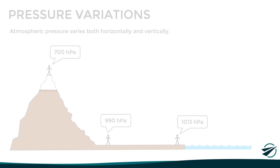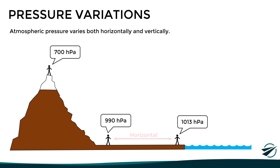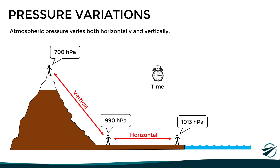In the previous video, we mentioned that atmospheric pressure varies both horizontally and vertically. A horizontal pressure variation refers to the fact that staying at the same level or altitude, if we move from one place to another, the atmospheric pressure changes. A vertical pressure variation implies that if we climb or descend in the atmosphere, the atmospheric pressure will change.